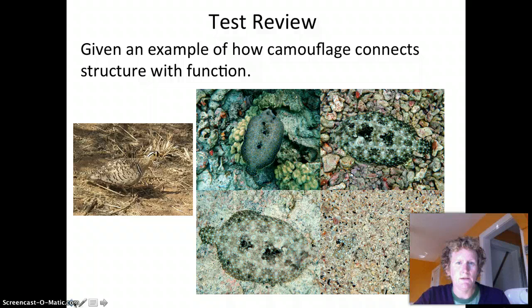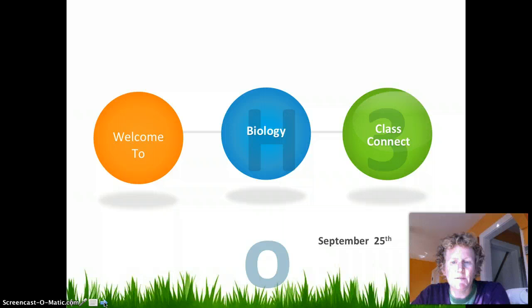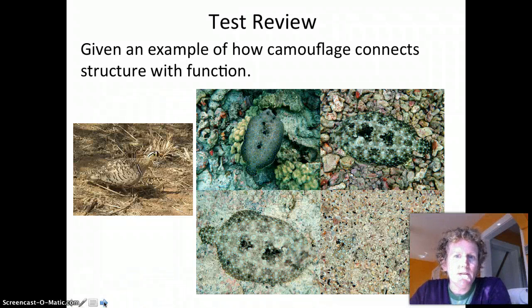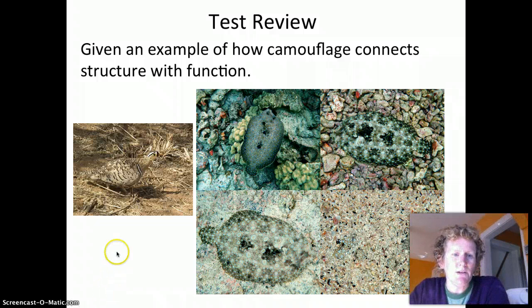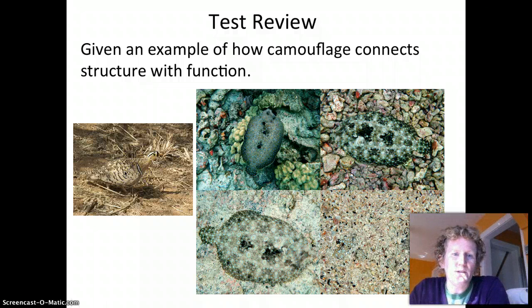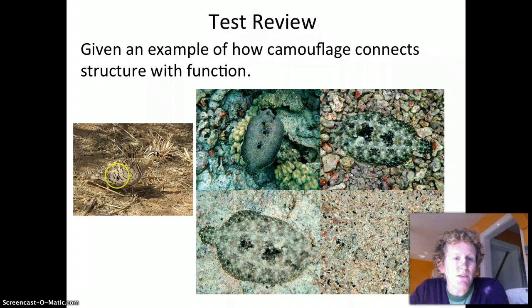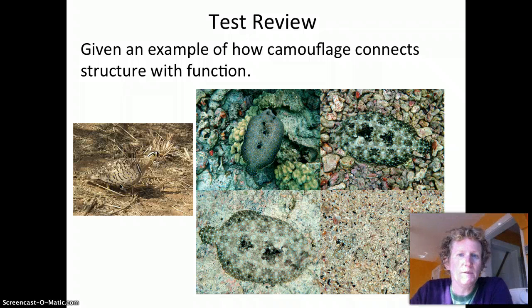Hi, this is Beth Rovelia and we are doing the Unit 1 test review. This is from class on September 25th. Give an example of how camouflage connects structure with function. This bird has brown feathers — that's part of the structure of the animal. The function of those feathers is to fly, but it's also to camouflage the animal.